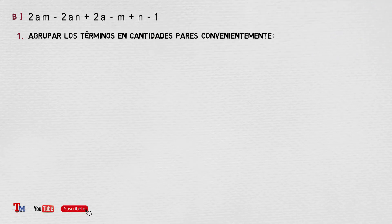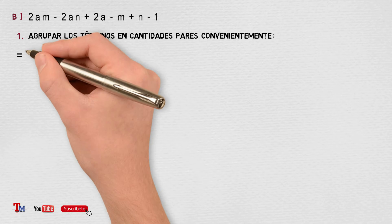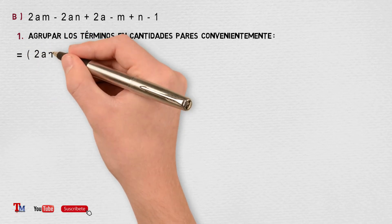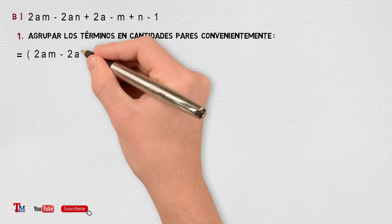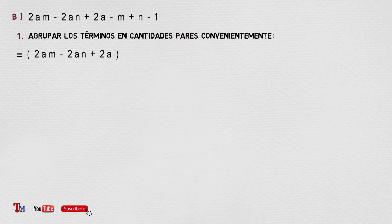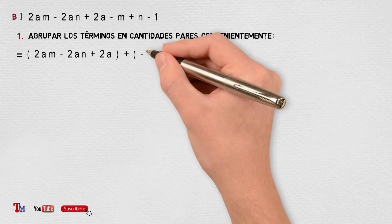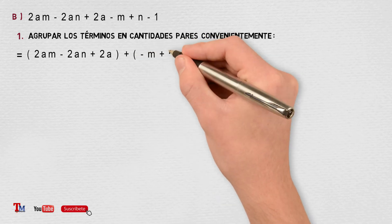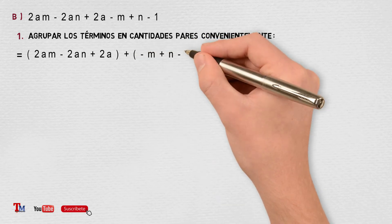El primer paso: agrupar los términos en cantidades pares convenientemente. En este caso, voy a agrupar cantidades de 3 términos convenientemente, aunque se obtendrá el mismo resultado si también agrupamos en parejas. Mi primera agrupación sería 2am menos 2an más 2a, y la siguiente agrupación menos m más n menos 1.